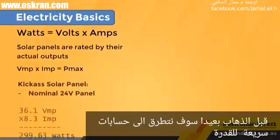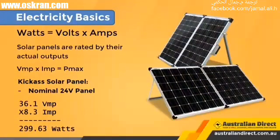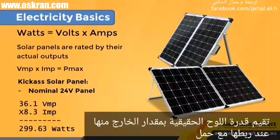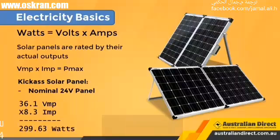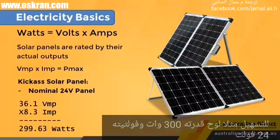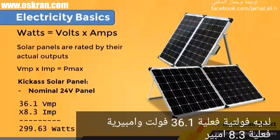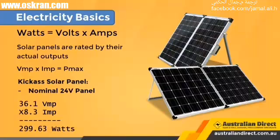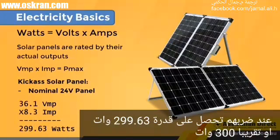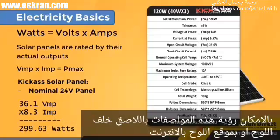Before I go further, I want to go over a quick reminder of power calculations. Solar panels are rated by their actual output when connected to a load. For instance, a generic 300-watt 24-volt nominal panel has an actual output of 36.1 volts VMP and 8.3 amps IMP. When you multiply them together, you get the rated watts — 299.63 watts, rounded up to 300 watts. You can see the specs on the solar module's back or in its datasheet.